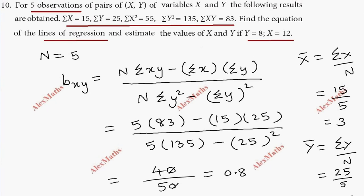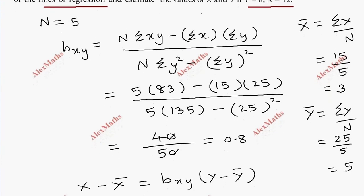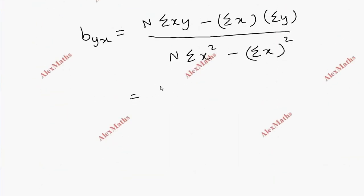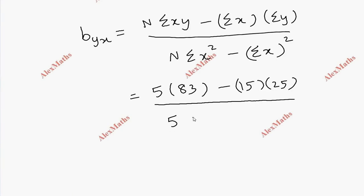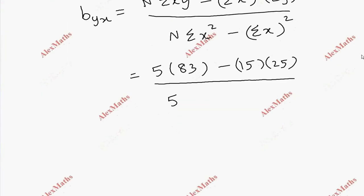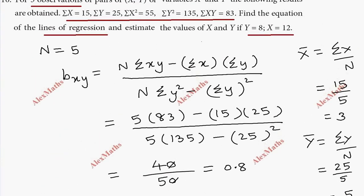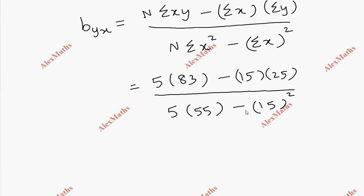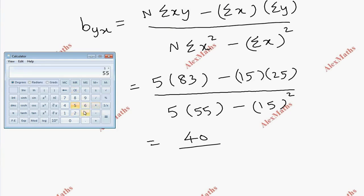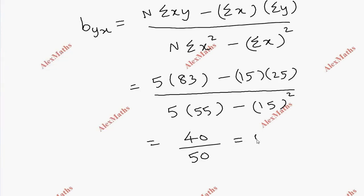Now for byx, substituting values: numerator is 5 into 83 minus 15 into 25, whole divided by 5 into sigma x square. Sigma x square is 55, minus sigma x whole value 15 squared. So numerator is 40 divided by denominator 5 into 55 minus 15 square. So 5 into 55 minus 225 equals 50, giving byx equal to 0.8.